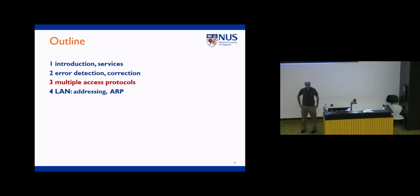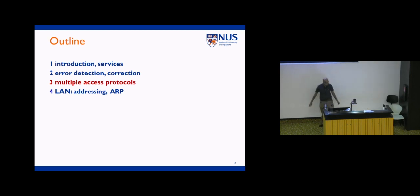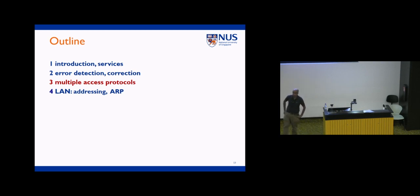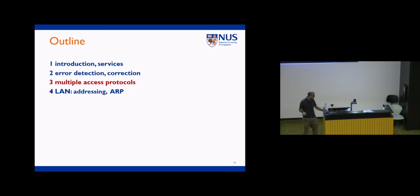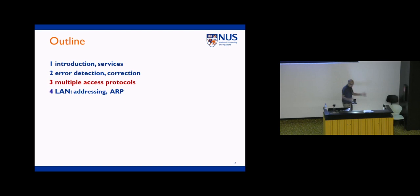Welcome back to E4-2-1-0. We'll continue with our discussion on link layer protocols. This is our agenda. For the last two lectures, we looked at the introduction to services provided by the link layer, error detection and correction options, and last time we focused on multiple access protocols. We'll have a quick recap of that, and today we'll spend time talking about LAN addressing and the ARP protocol. Maybe today we can do one of our tutorial problems.